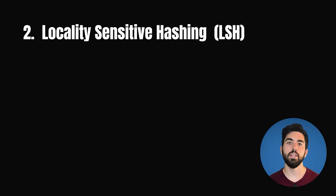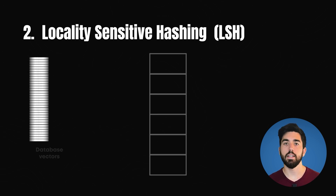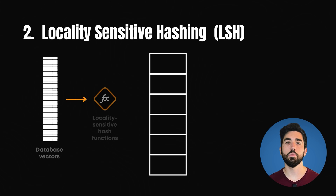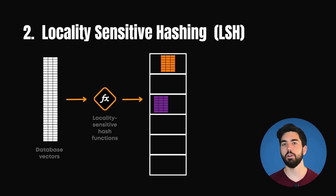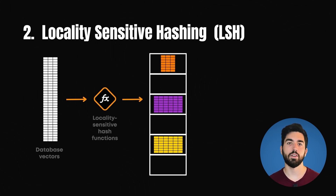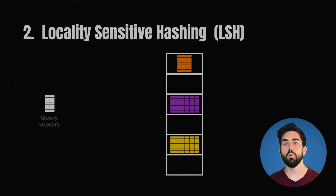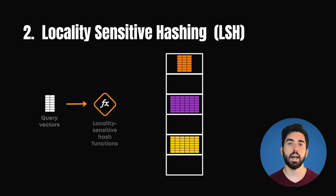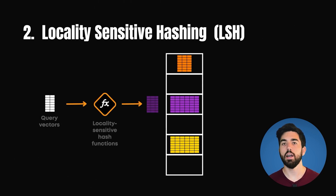The next type of indexing is locality-sensitive hashing, or LSH indexes. In this approach, vectors are grouped into buckets based on similarity, using specialized locality-sensitive hash functions. When a query vector is introduced, it is hashed using the same functions to identify the most similar buckets.